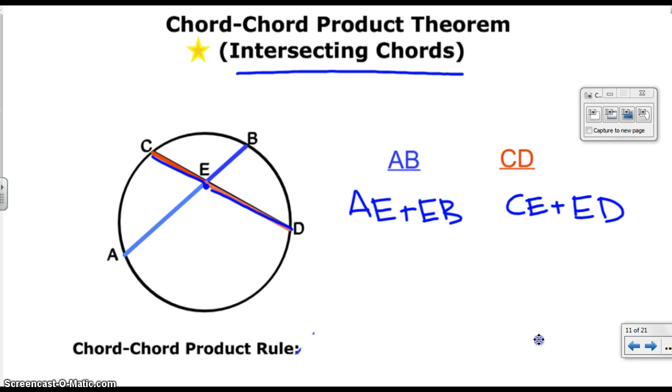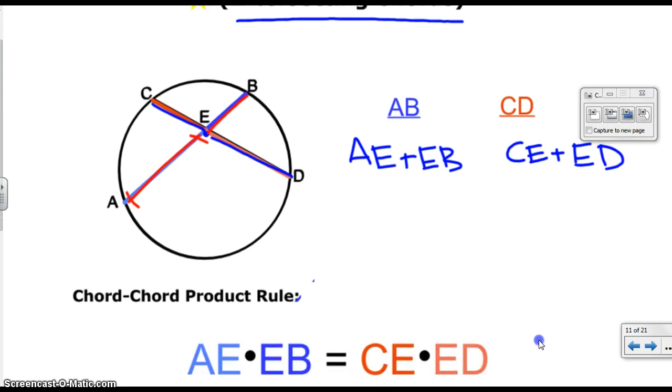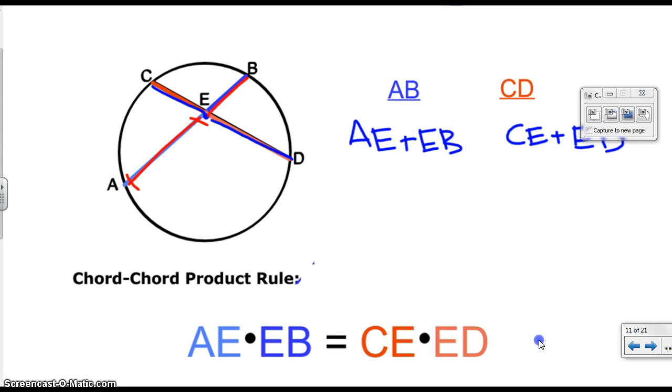The chord-chord product rule looks like this. It says that AE times EB equals CE times ED. It's just like what we talked about before. Make sure you recognize that's multiplication. The two parts multiplied by each other are going to equal the two parts multiplied by each other from the other chord. That's all that really means. You probably want to see this in action, right? Well, don't worry about it because we're going to show you a few example problems.